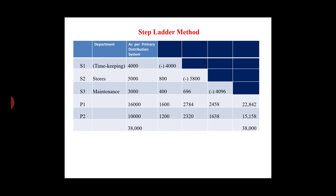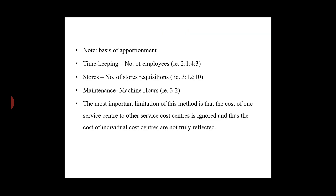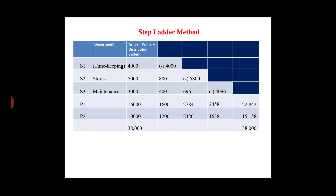Next, the maintenance department S3 has a primary cost of 3,000. After receiving its share from timekeeping, S1 levels: S2 receives 400 and the adjusted S2 total is 696. The total comes to 4,096. We then allocate this amount to P1 and P2. Using a ratio of 3 to 2, we allocate the total value as the base for the final allocation.